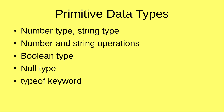Hello everybody, welcome to the JavaScript course. In this video, I'm going to tell you about the primitive data types. We have to consider the number type, the string type, and the operations of these two data types. I'm also going to talk about the boolean type, the null type, and the typeof keyword that helps show the data type of a variable.